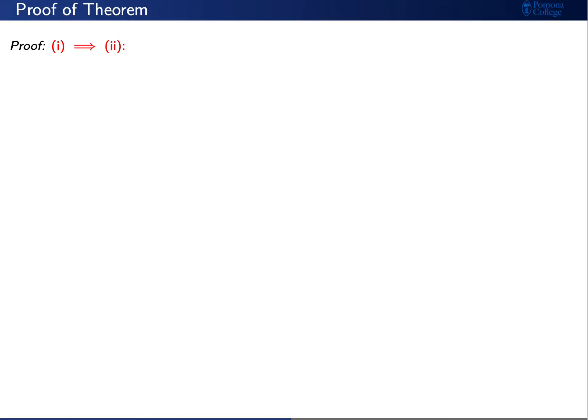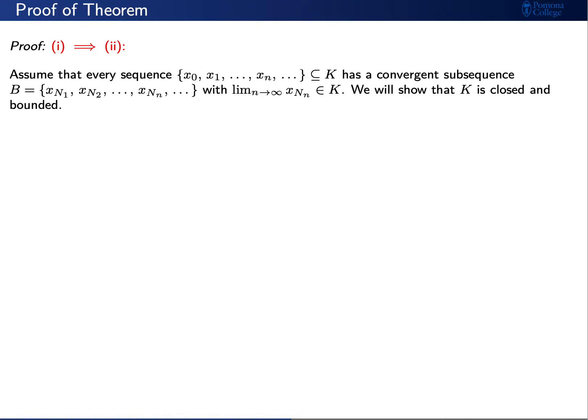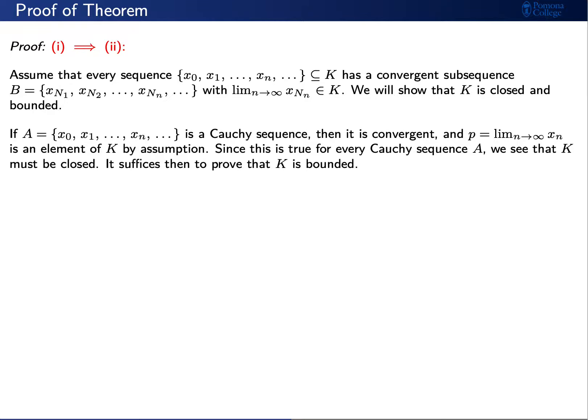Let's present a proof of this theorem. We'll prove it in four directions: statement one implies two, two implies one, two implies three, and three implies two. First, let's prove that statement one implies statement two. Assume that every sequence in K has a convergent subsequence whose limit is also in K. We want to prove that K is closed and bounded. For the closed part, consider any Cauchy sequence in K. Since it's Cauchy, it converges and therefore has a limit. By assumption, its limit is an element of K. Since this is true for every Cauchy sequence, K must be closed.